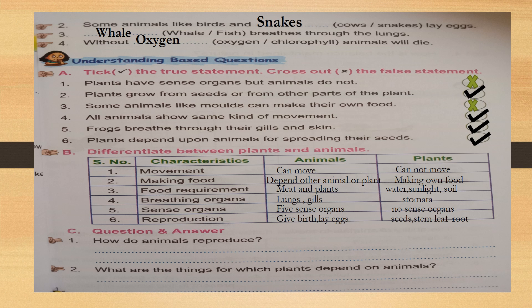Third one: dash breathes through the lungs. Two animals are given as options. They breathe through lungs — whale or fish? Fish breathe through gills, so the answer is whale. Very good children. Whale breathes through the lungs.